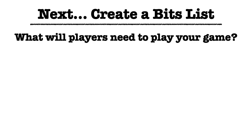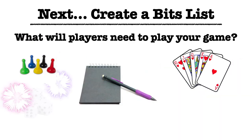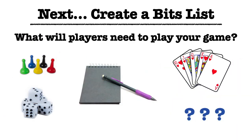One important early step is to create and manage a bits list — what is going into your game, and what will players need to play it? This can consist of a wide range of things. At this point, these can be things that players scrounge around the house. They might go and scavenge dice from Yahtzee, pawns from Monopoly, or use a standard 52-card poker deck. They'll likely have paper and pencil to keep track of notes or scores.